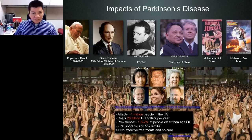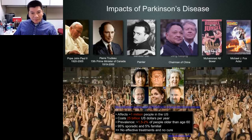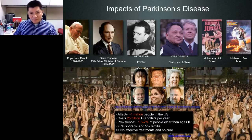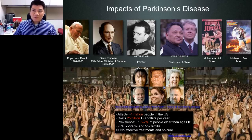Most cases are known as sporadic cases, meaning we don't know what caused the disease. There's a small number — perhaps up to 10% — known as familial forms of Parkinson's disease, caused by genetic mutations passed down from one generation to the next. The familial form is what we are focusing on to understand the mechanisms of disease, because we know specific mutations in specific genes that we can study.